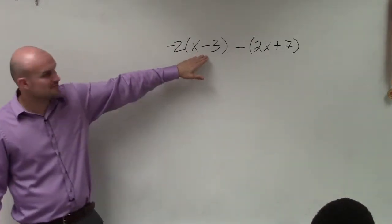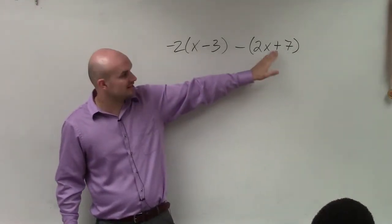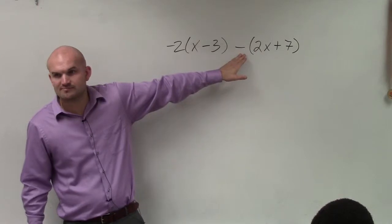So here we have, inside this parentheses, x minus 3. That's being multiplied by negative 2. Here we have 2x plus 7 is being, well, it's just being this minus, right?